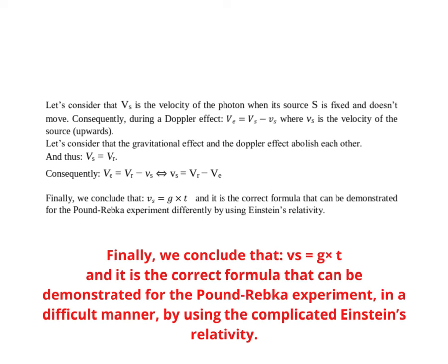Finally, we conclude that little vs equals g times t. And it is the correct formula that can be demonstrated for the Pound-Rebka experiment, in a difficult manner, by using the complicated Einstein's relativity.